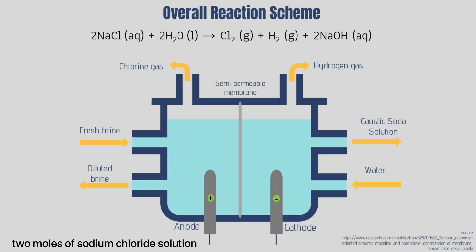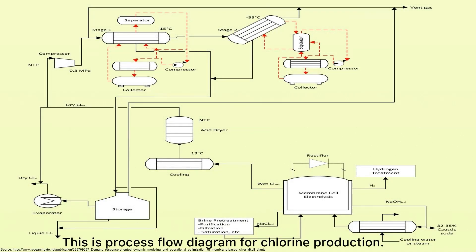The overall reaction scheme of this process is two moles of sodium chloride solution reacts with two moles of water to produce one mole of chlorine gas, one mole of hydrogen gas, and two moles of sodium hydroxide solution. This is process flow diagram for chlorine production.